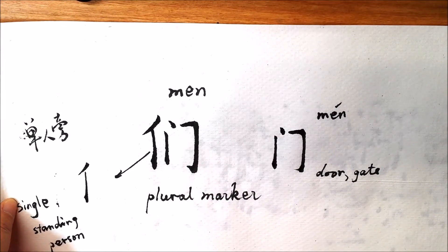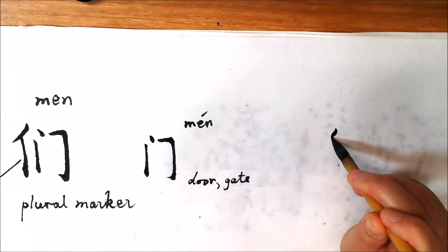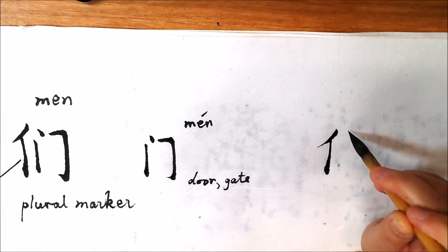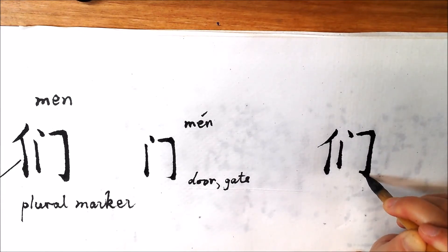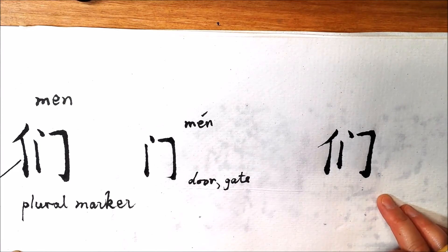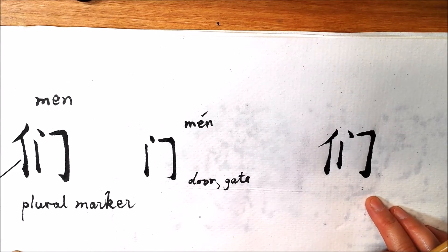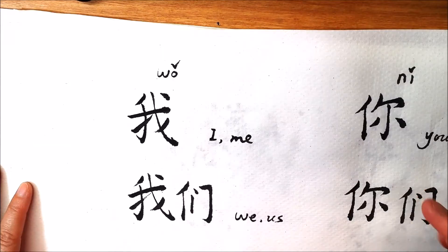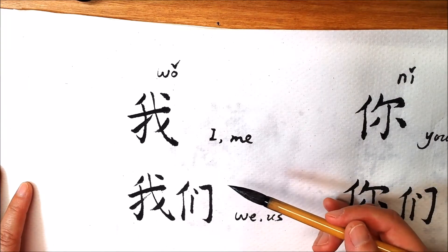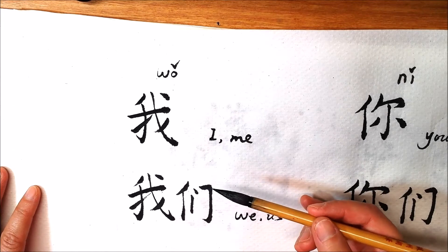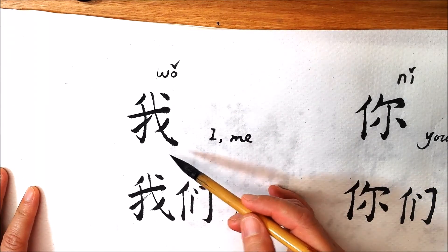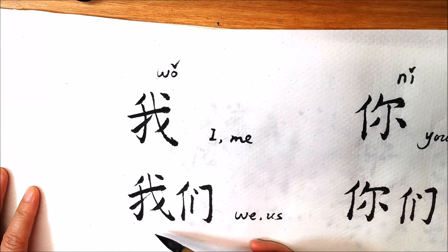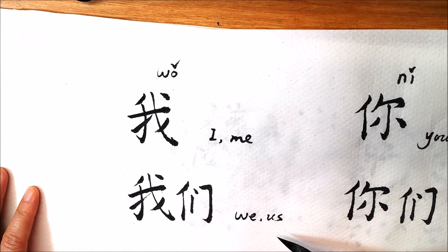Let's see how to write it. Since it is a plural marker, we'll see how it works to mark the plural word. First, it can change the singular pronoun into plural. For example, 我 means I or me. 我们 means we or us.